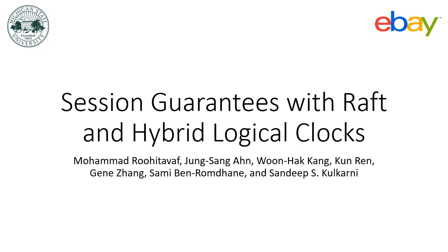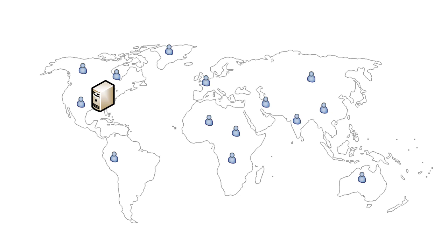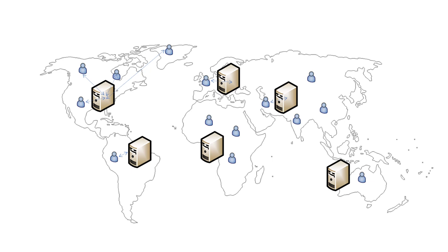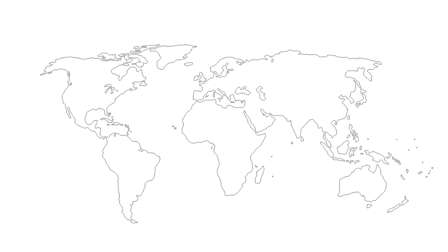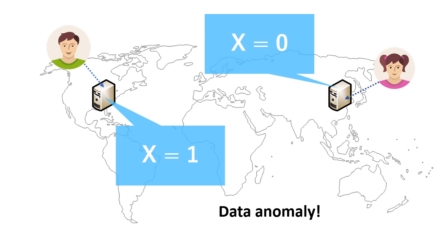Usually, service providers replicate their data in different geographical locations. This technique is called geo-replication and allows us to decrease the network latency for local clients and increase the data availability. A big challenge in replicating the data is the problem of inconsistency between replicas. It is possible that two replicas have different values for the same data item. This is called data anomaly and it makes life hard for application developers.